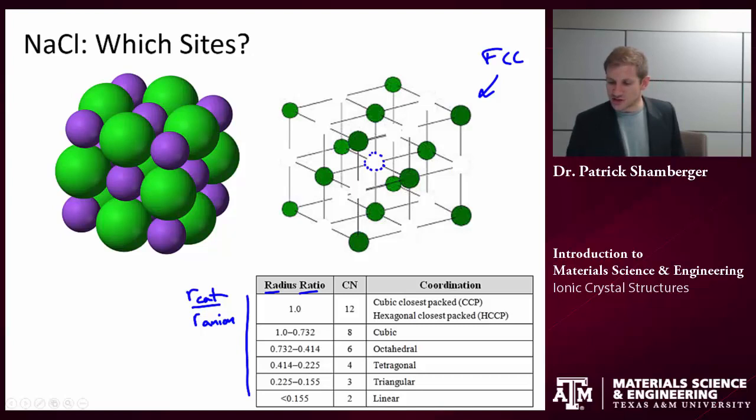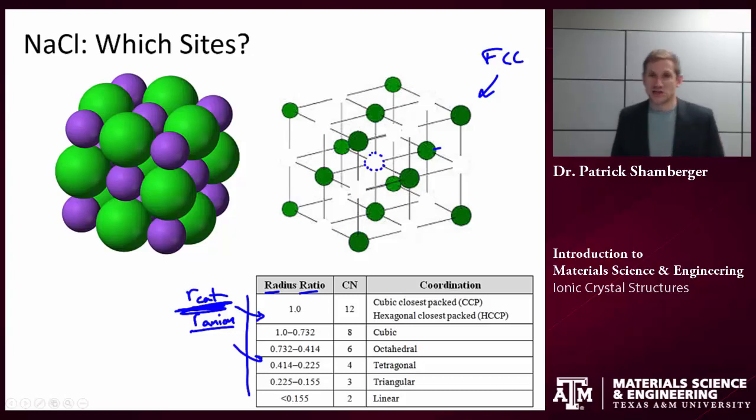the available size of the different sites, for example there's an octahedral site right in the middle of the FCC lattice, I can calculate out the size of that interstitial position as a function of the anion radius. If I look at the cation to anion ratio, I can basically look at a table and say what kind of site those cations would like to occupy.